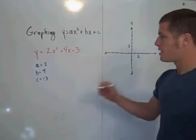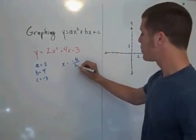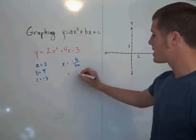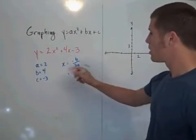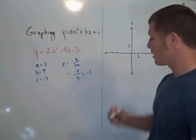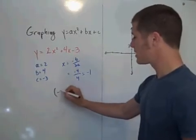The x value of the vertex is always negative b over 2a when your equation is written in standard form. So in this case, that's negative 4 over 4, which is negative 1. So the x value of our vertex is negative 1.